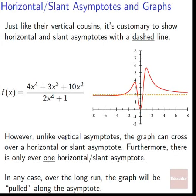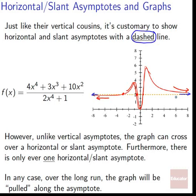For horizontal and slant asymptotes in graphs — just like their vertical cousins — it's customary to show them with a dashed line. For example, 4x to the 4th plus 3x cubed plus 10x squared divided by 2x to the 4th plus 1 has a horizontal asymptote at 2. Notice that unlike vertical asymptotes, the graph can actually cross the horizontal or slant asymptote. Furthermore, there's only ever one horizontal or slant asymptote. Over the long run, the graph will be pulled along the asymptote.